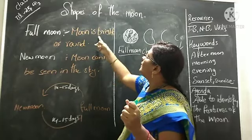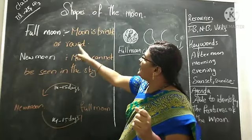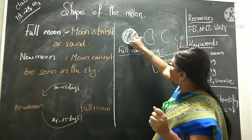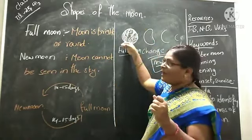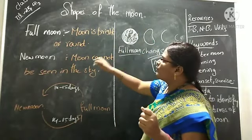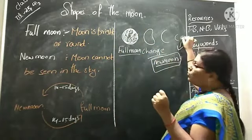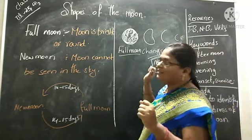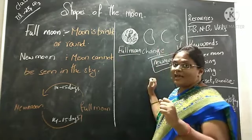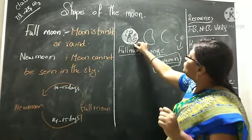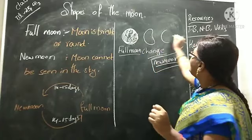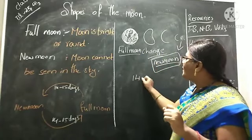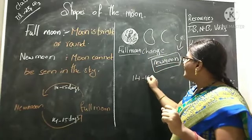Full moon means the moon is bright and round. New moon means there is no moon in the sky — the moon cannot be seen. From full moon to new moon, it takes 14 to 15 days.